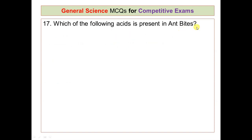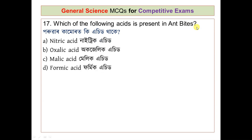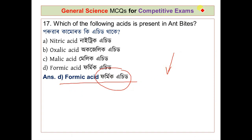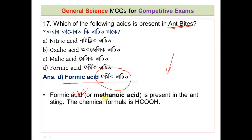Question number 17: which of the following acids is present in ant stings? The options are nitric acid, oxalic acid, malic acid, and formic acid. The correct answer is formic acid, also known as methanoic acid, which is present in the ant's sting. Its chemical formula is HCOOH.